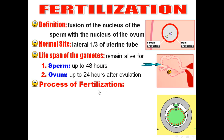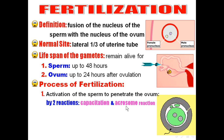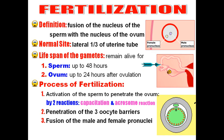The process of fertilization consists of three steps. First, activation of the sperms — done by two reactions: capacitation and the acrosome reaction. Second, penetration of the three oocyte barriers. Third, fusion of the male and female pronuclei. Then we'll talk about the results of fertilization.